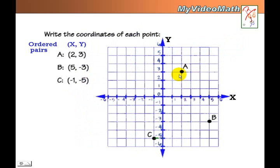Let's take a closer look on point A. 2 and 3. x-coordinate is 2, y-coordinate is 3. Where they meet is A, point A. B is 5, negative 3, 5 and negative 3. D is negative 1 and negative 5. Now you got it.